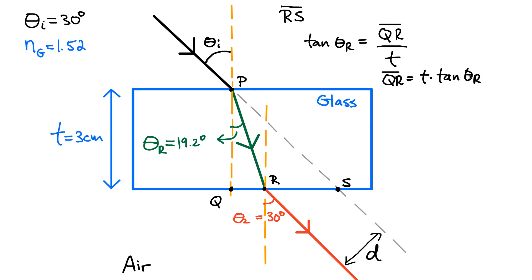Now let's look at the segment QS. If I look at the triangle P, Q, and S, I know this angle on the inside has to be 30 degrees — that's the angle between the gray line and the normal. So the expression for QS almost looks exactly like that of QR because we're looking at the same style of triangle. Except in this case, QS is simply going to be T multiplied by the tangent — not of theta R, but of the initial angle of incidence, which is 30 degrees.